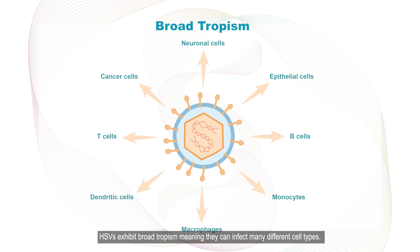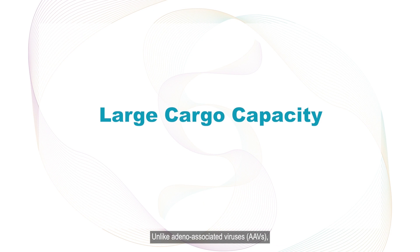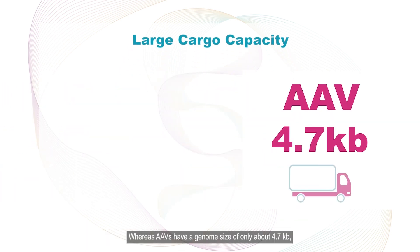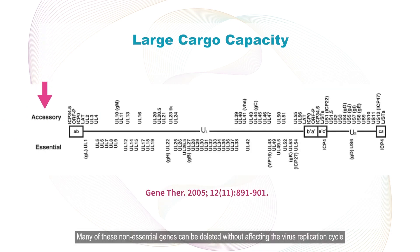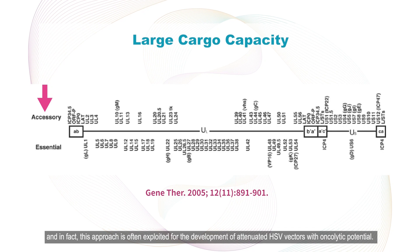HSVs exhibit broad tropism, meaning they can infect many different cell types. Unlike adeno-associated viruses, or AAVs, they carry huge amounts of DNA sequence for delivery to target cells. Whereas AAVs have a genome size of only about 4.7 kilobases, HSVs have a genome size of over 150 Kb, which consists of several non-essential genes. Many of these non-essential genes can be deleted without affecting the virus replication cycle, and in fact this approach is often exploited for the development of attenuated HSV vectors with oncolytic potential.